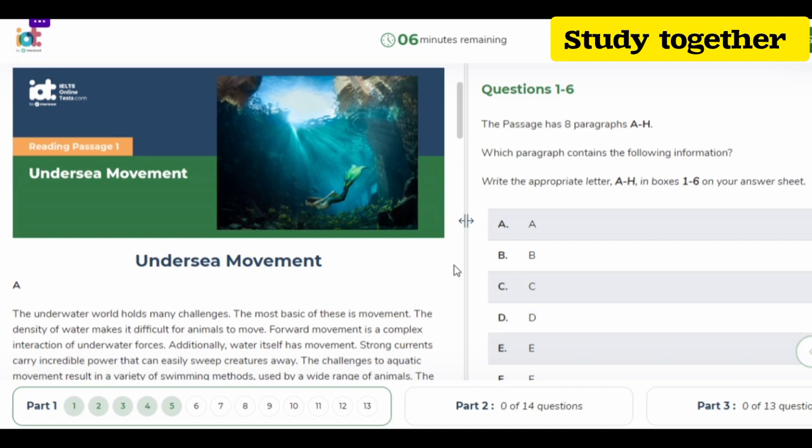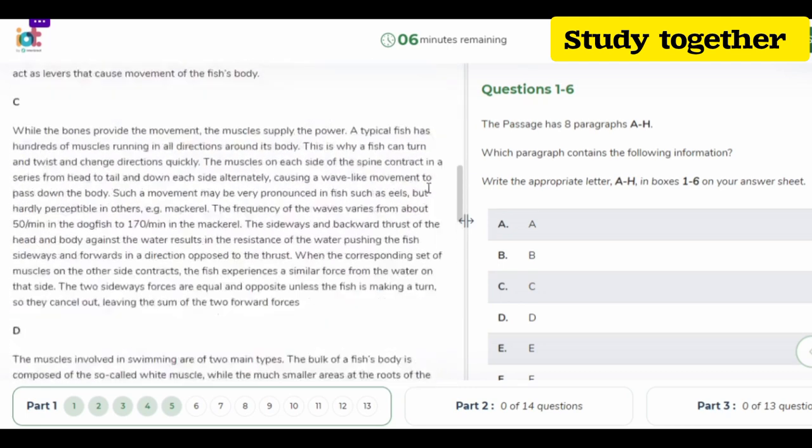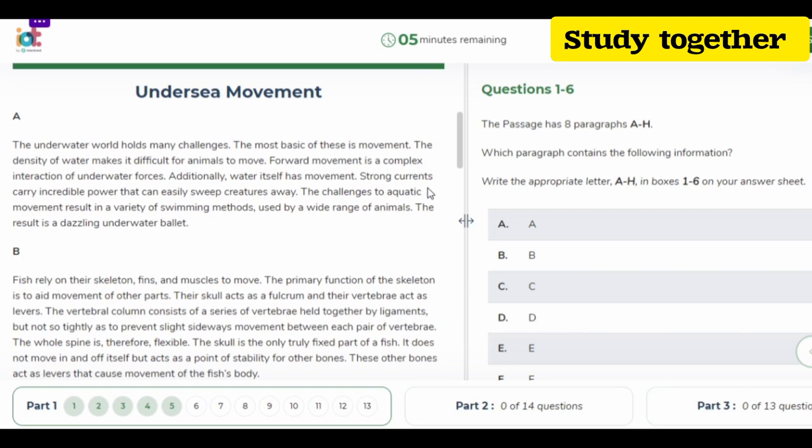The first passage is about undersea movement. It has basically eight paragraphs. The first paragraph is: the underwater world holds many challenges, the most basic of these is movement. The density of water makes it difficult for animals to move forward. Movement is a complex interaction of underwater forces. Additionally, water itself has movement. Strong currents carry incredible power that can easily sweep creatures away. The challenges to aquatic movement result in a variety of swimming methods used by a wide range of animals.